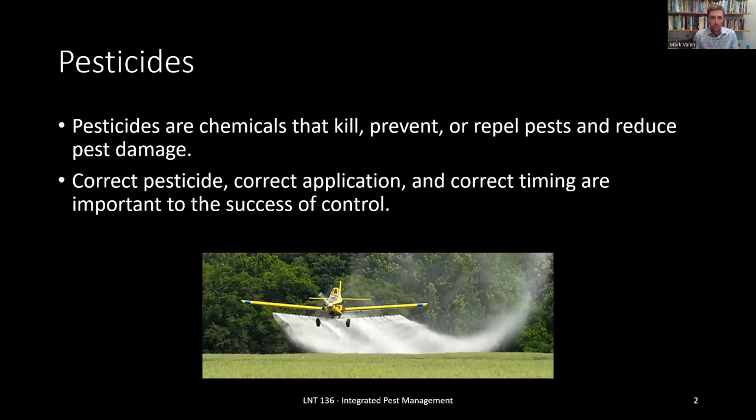Remember, we can further break down this definition of pesticides as we would further divide the category of a pest. So you could have an insecticide, something that goes after an insect pest. You can have a fungicide, something that goes after a fungus. You can have a rodenticide, something that goes after a rodent pest. And you can have an herbicide, something that goes after a weed.